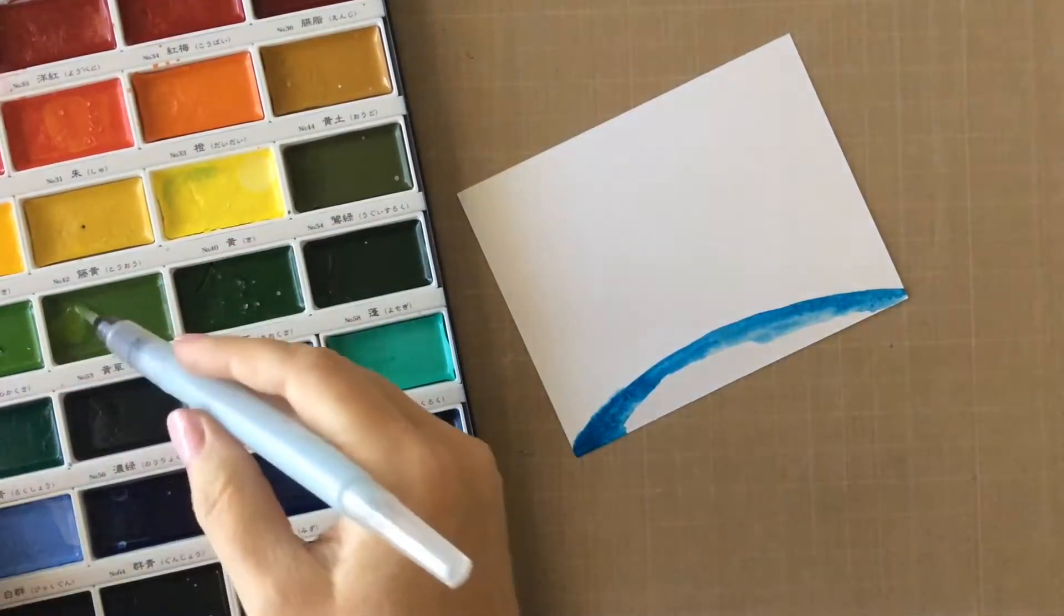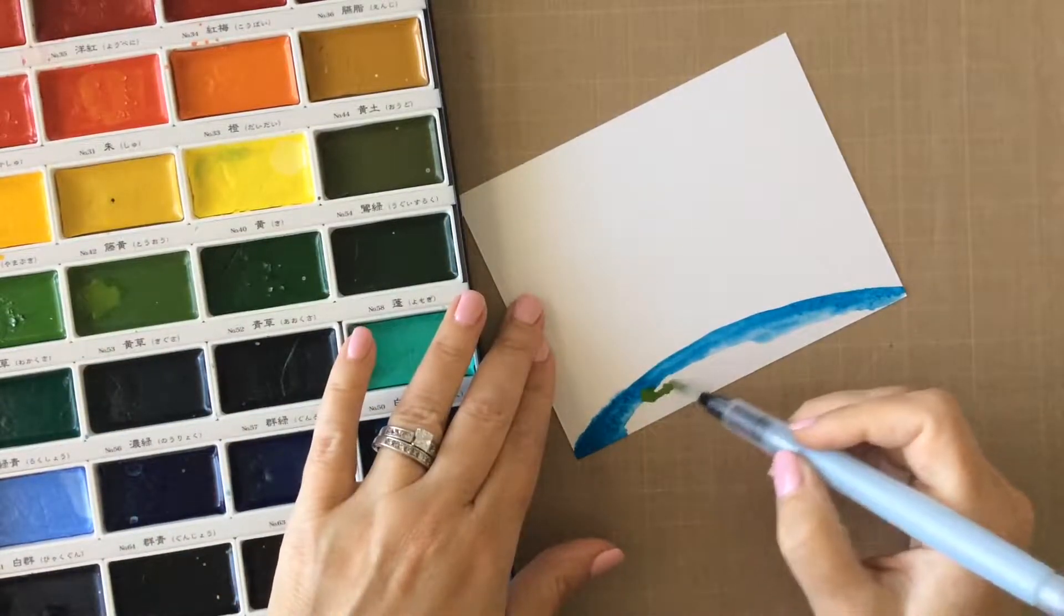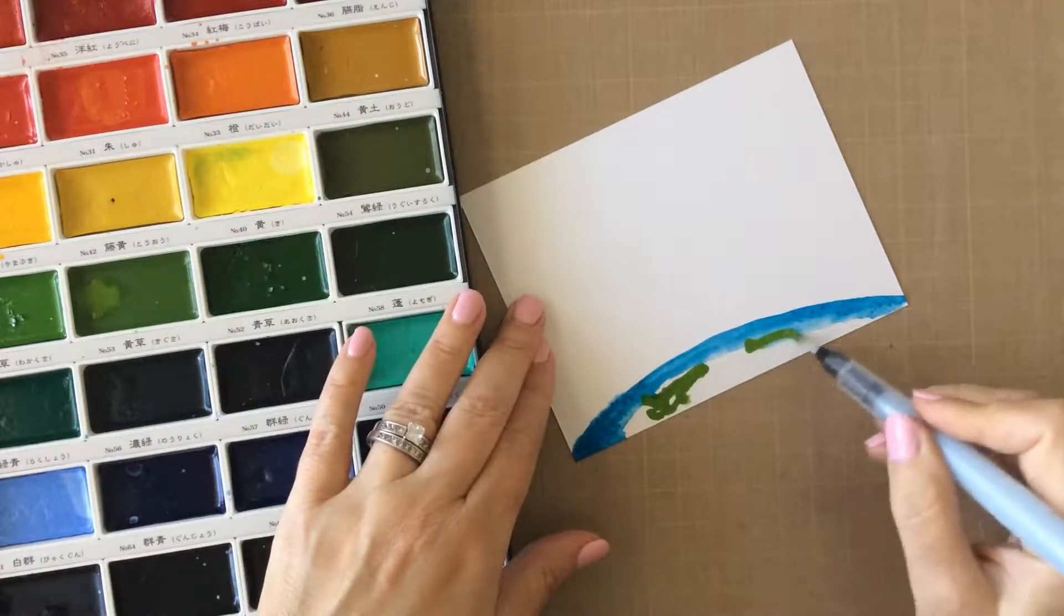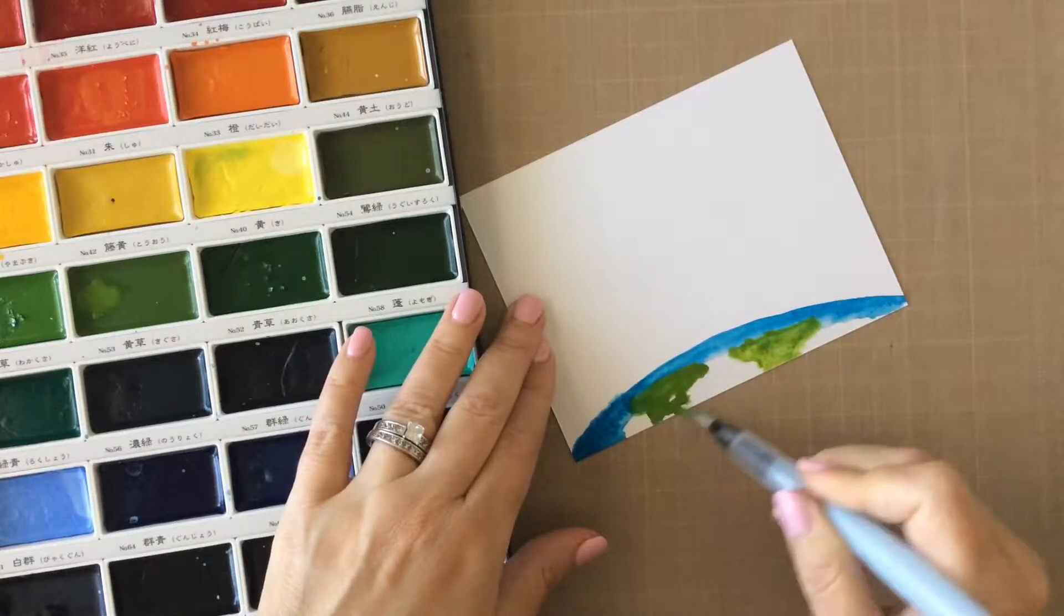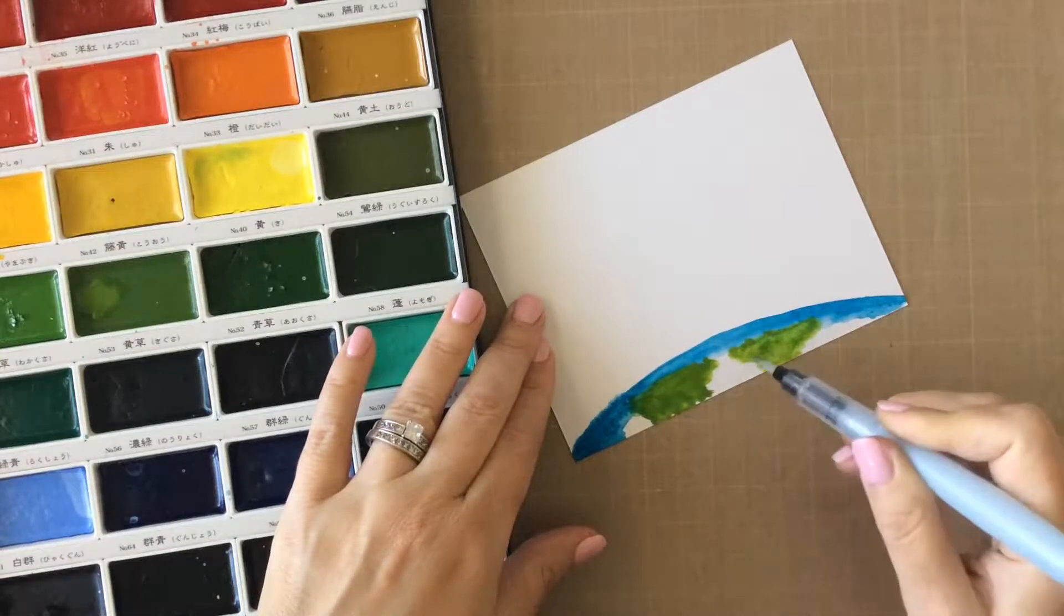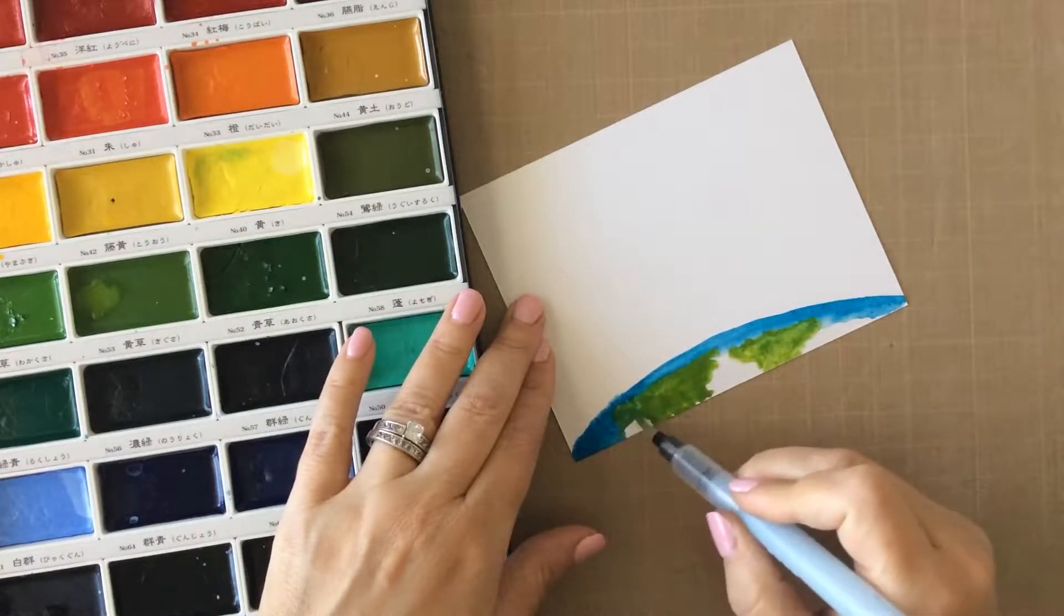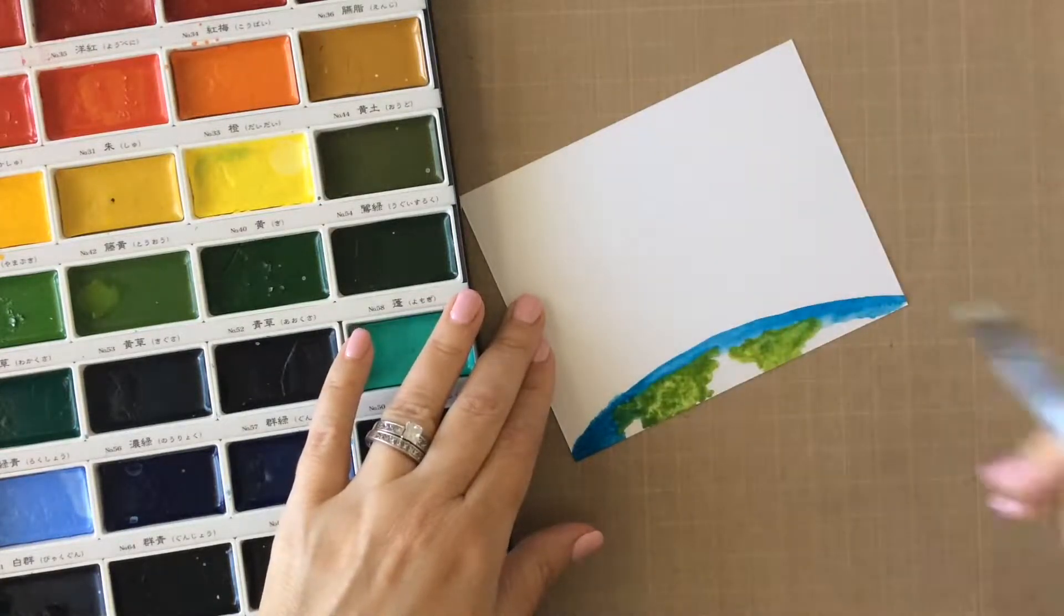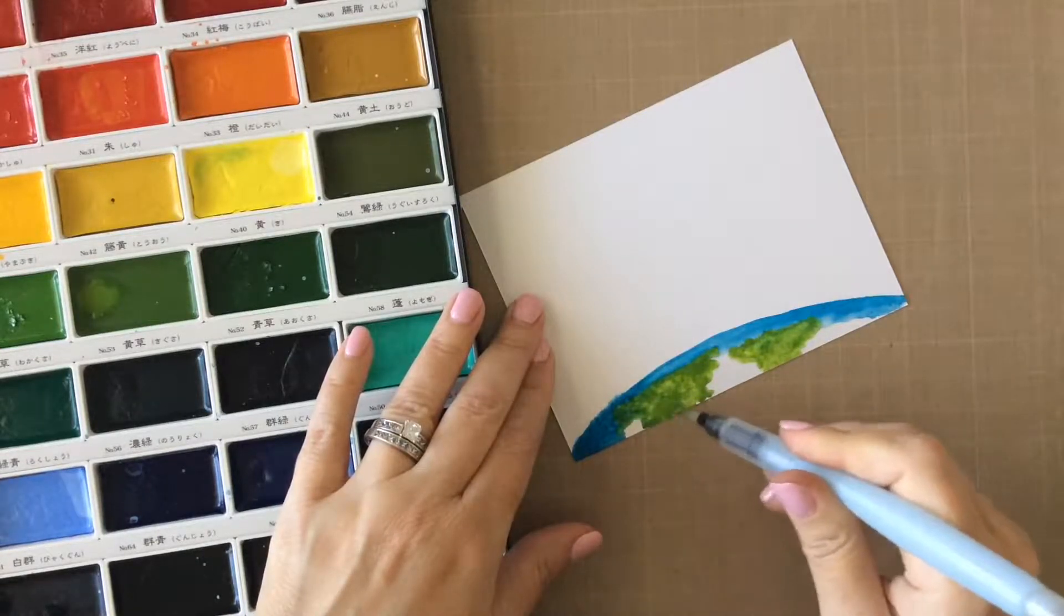And then we'll go to that number 53, the green color, and add some land masses. Now it's going to start out looking not too pretty, as sometimes art projects go, but just create kind of a likeness of these land masses. And if you get a little too much paint on there, that's okay, you can just dab some off with a little bit of a paper towel or a Kleenex, which is what I'm using here.